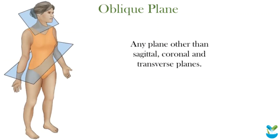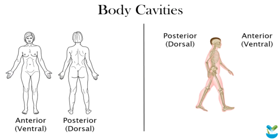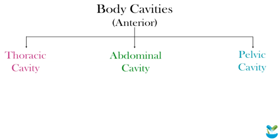Any plane other than these three planes is an oblique plane. Now we'll discuss body cavities — what cavities are present on the anterior or ventral side of the body, and what cavities are on the posterior or dorsal side of the body.